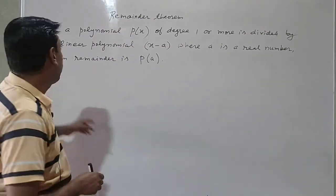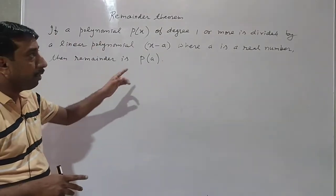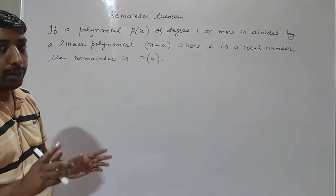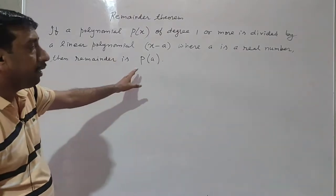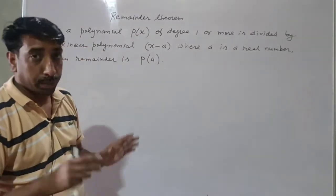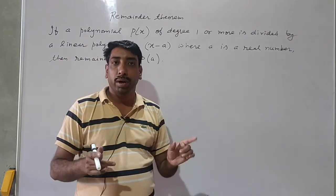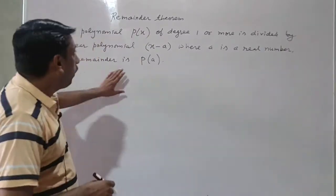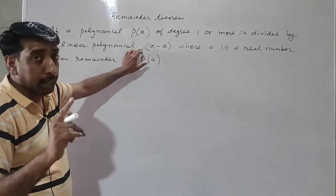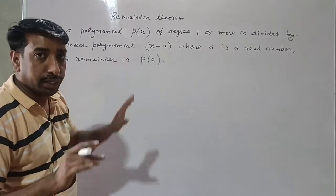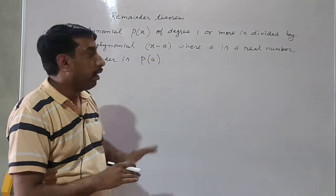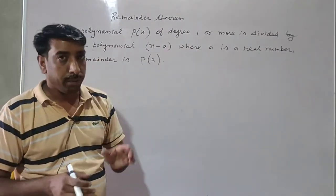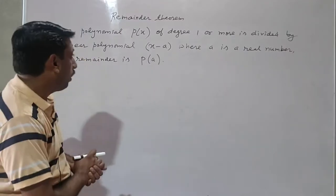What is the statement of this theorem? If a polynomial P(x) of degree 1 or more is divided by a linear polynomial x minus a, where a is a real number, then the remainder is P(a). The degree must be at least 1. If we divide that polynomial by x minus a, a linear polynomial, then the remainder can be found directly without applying the division process — the remainder will be P(a).